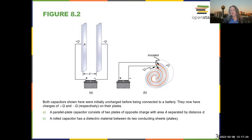A parallel plate capacitor has two plates of opposite charge. We typically assume that they are planes, usually rectangular, that have a certain area and are separated by a distance d.